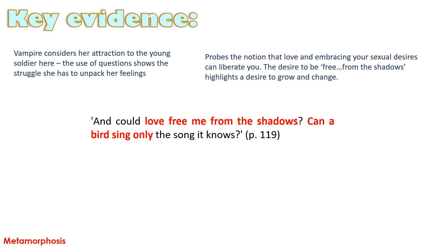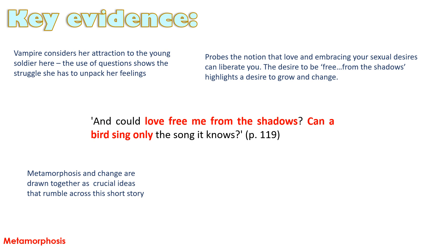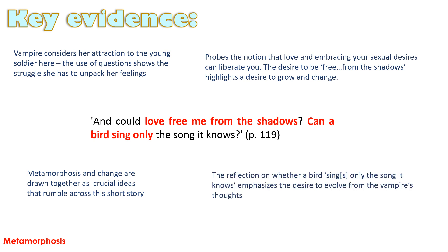That desire to be free from the shadows is a desire to grow, change, and be an adult. But metamorphosis and change in this story are drawn together as ideas that lead to the downfall of this character. The second question — whether a bird can sing only the song it knows — emphasises the vampire's desire to evolve not just in her actions but in her thoughts, and, dare I say it, the fear that goes alongside that.